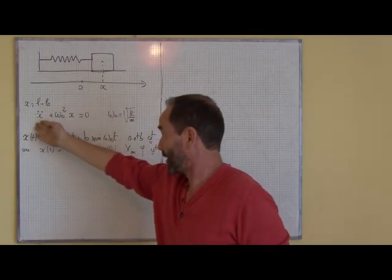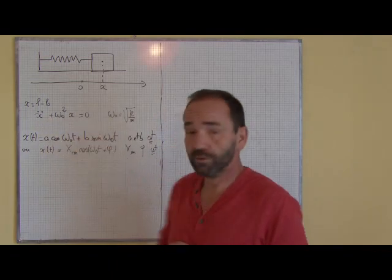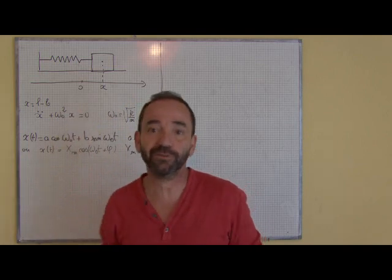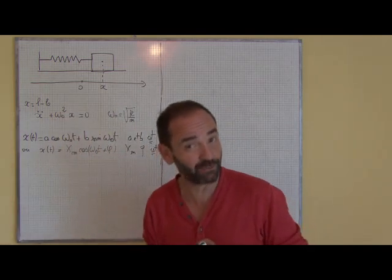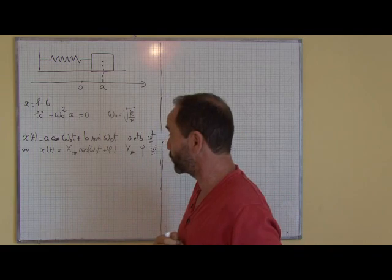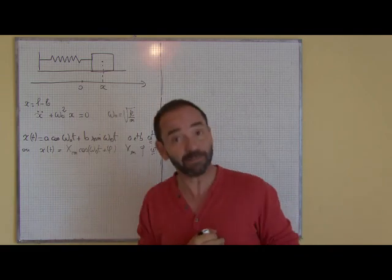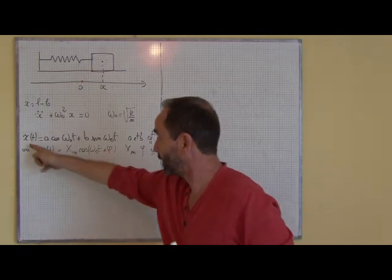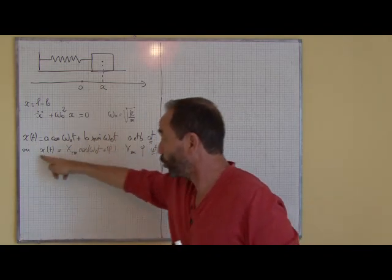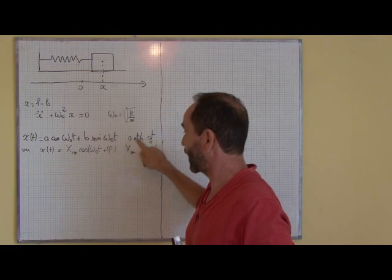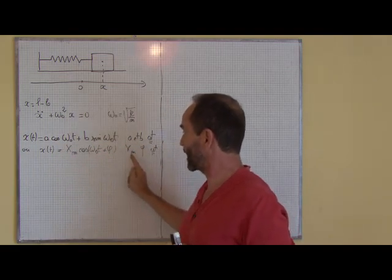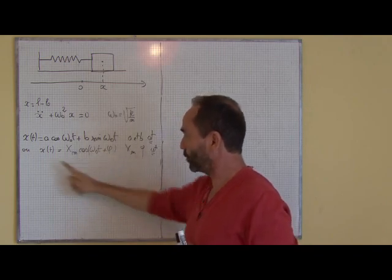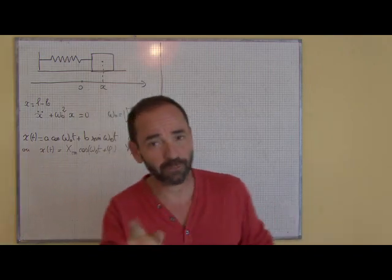On a vu sur l'animation que x variait de façon sinusoïdale au cours du temps, c'était une fonction sinusoïdale du temps. Donc vous allez démontrer que la solution de cette équation différentielle en x est sous cette forme-là, ou sous cette forme-là, avec a et b constantes dans ce cas-là, et xm et phi constantes également dans cette seconde expression. À vous de travailler !